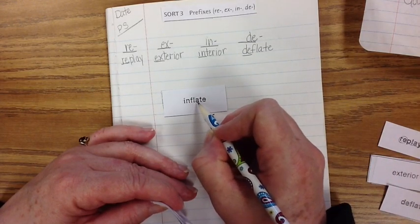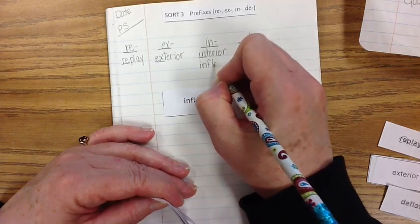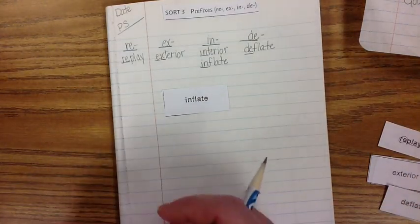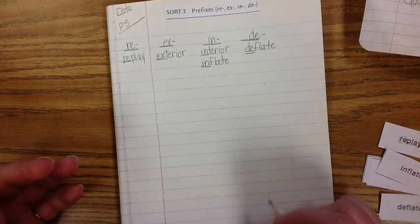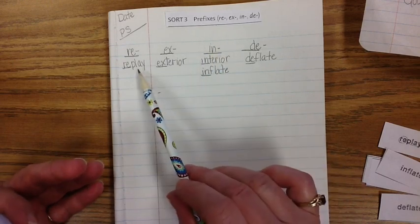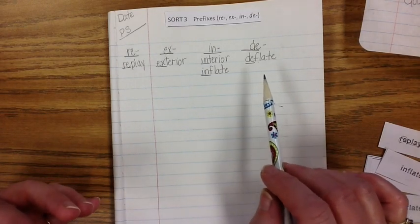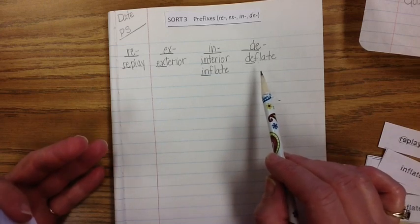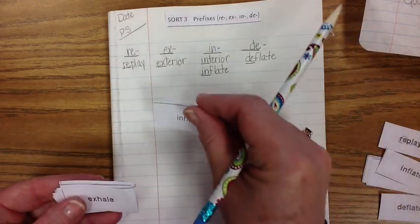Now remember, students, you need to really pay attention to the words and really pay attention to your patterns. Our patterns are the prefixes, but you also need to make sure you're paying attention to the other part of the word so you understand how to spell that. Sometimes we're not studying that pattern in that word, but you need to really pay attention to that also, or you won't do well in your spelling assessment when we do the big one.